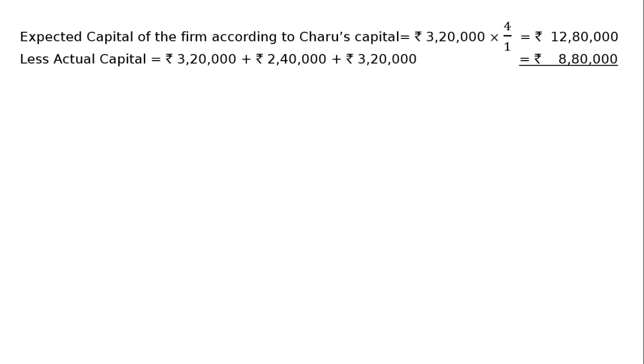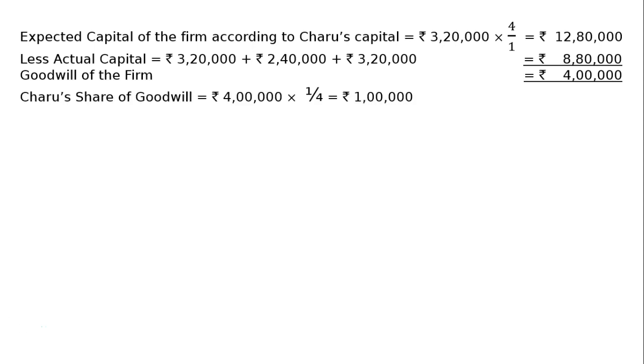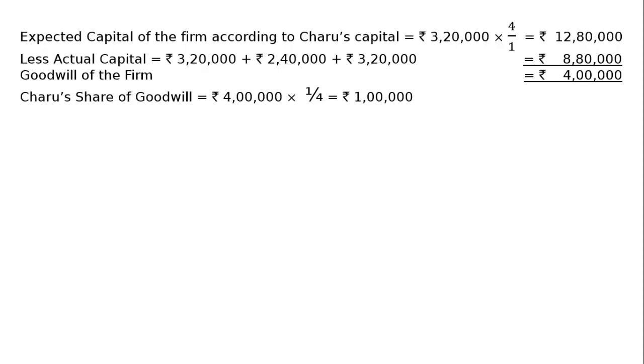This capital is equal to... the actual capital, which is equal to... 8,80,000. And the premium is equal to 1,00,000. And we will distribute to 1,00,000. Anil and Sunil ko 50,000, 50,000.